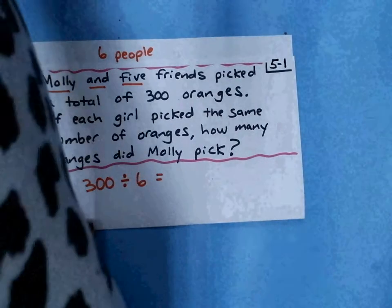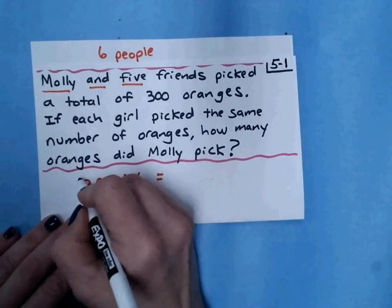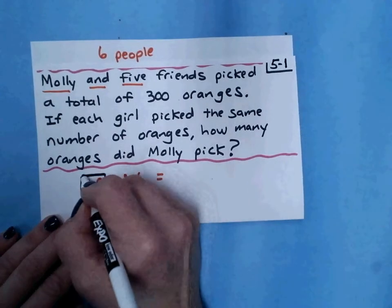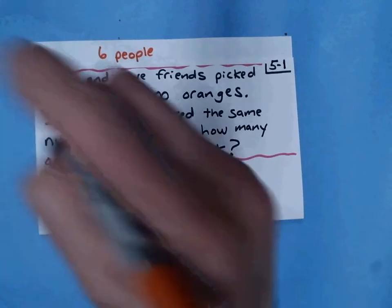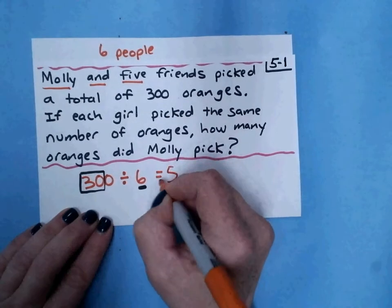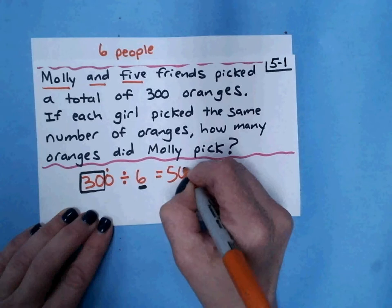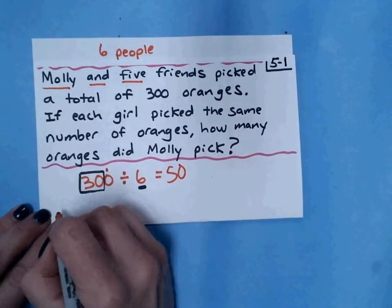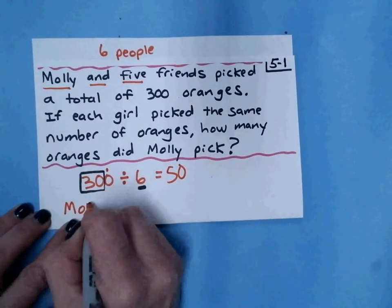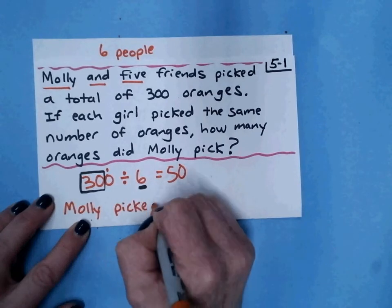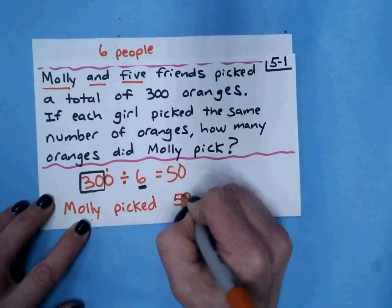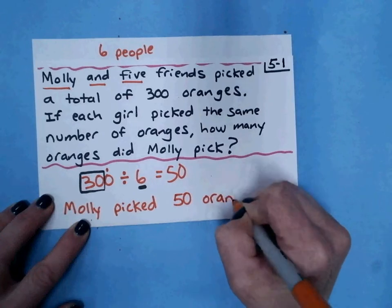My basic fact here is 30 divided by 6 and 30 divided by 6 is 5 and then I would add on this 0. That means that Molly picked 50 oranges.